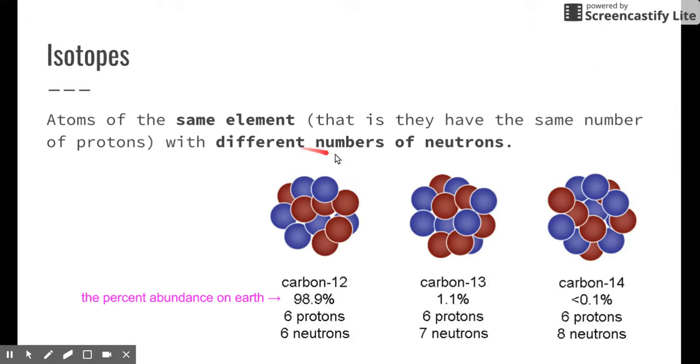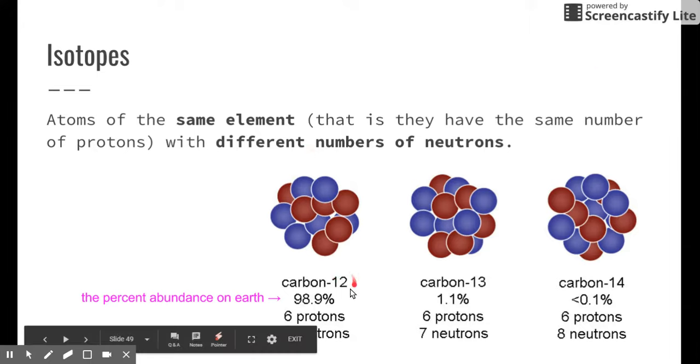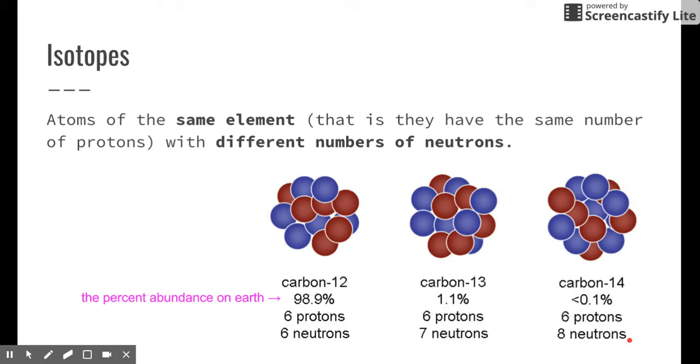Here's another example. Here we have three carbon atoms. Carbon-12, that's the mass, the number of protons and neutrons. Here we have carbon-13 with a mass of protons and neutrons. Notice carbon-12 has six protons and six neutrons. Carbon-13 has six protons and seven neutrons and carbon-14 has six protons and eight neutrons. All of these are called isotopes of carbon because they are all carbon, but they have different numbers of neutrons and different masses.